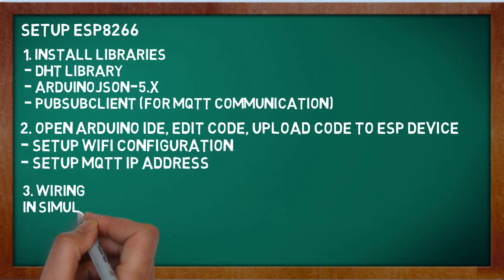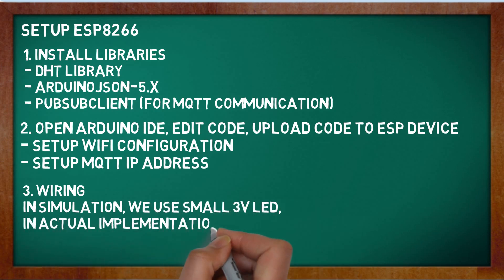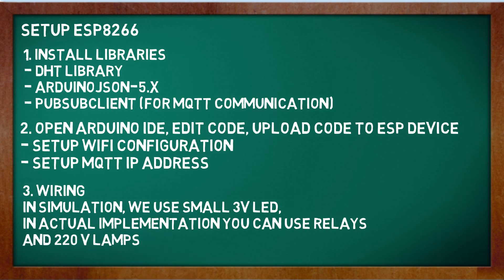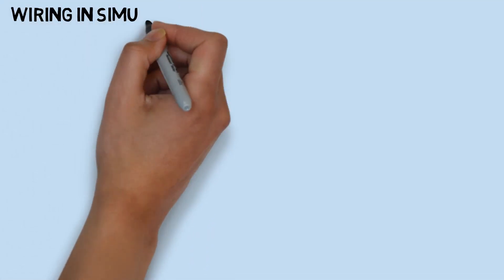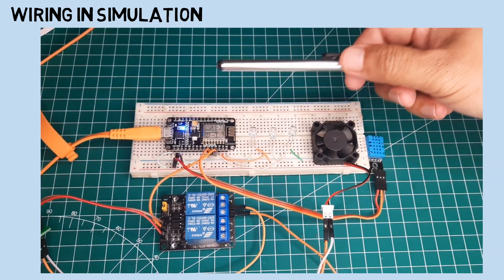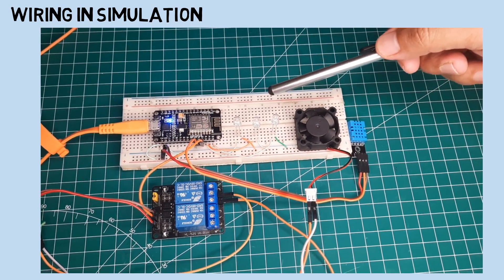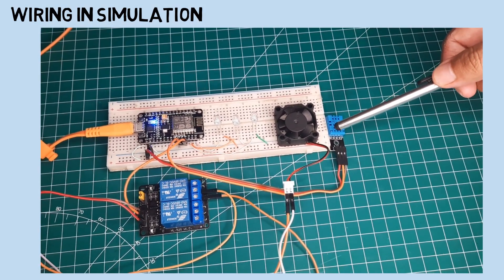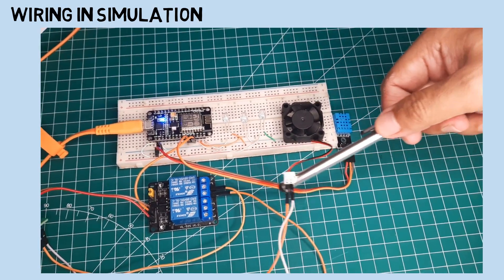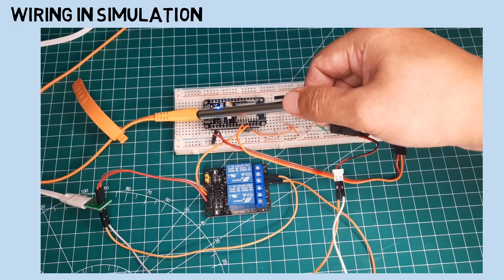Then set up the wiring for devices. In simulation, we use small LED lamps; in actual implementation, you can use relays and 220V lamps. This is the wiring for simulation — we use 3 LED lamps, a small fan, and a DHT11 sensor. Because the fan needs 5V, we use a relay and an external source to supply voltage to the fan.